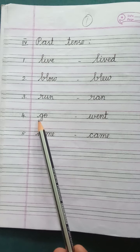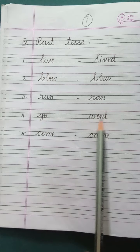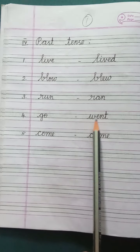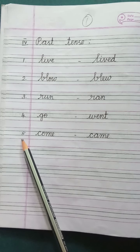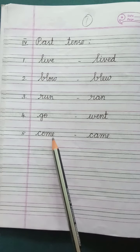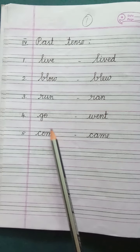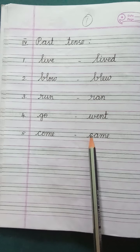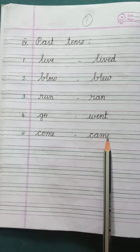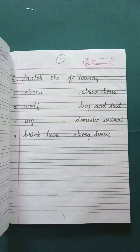Number 4: Go — the past tense for go is Went. W-E-N-T, Went. Number 5: Come — the past tense for come is Came. C-A-M-E, Came.